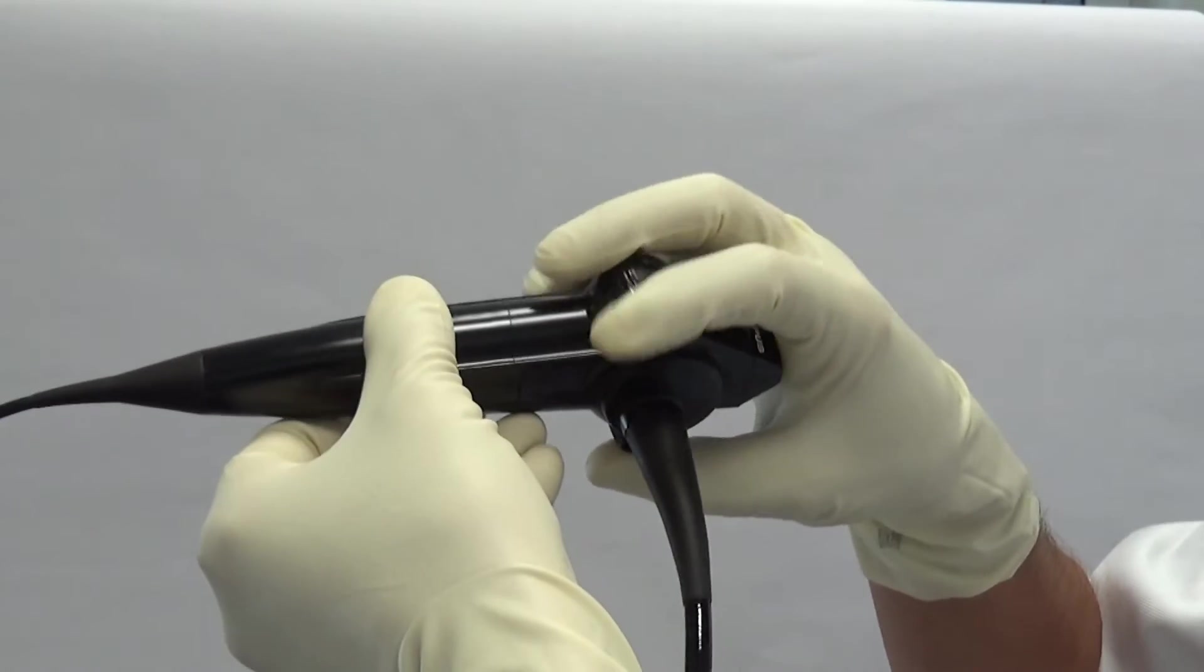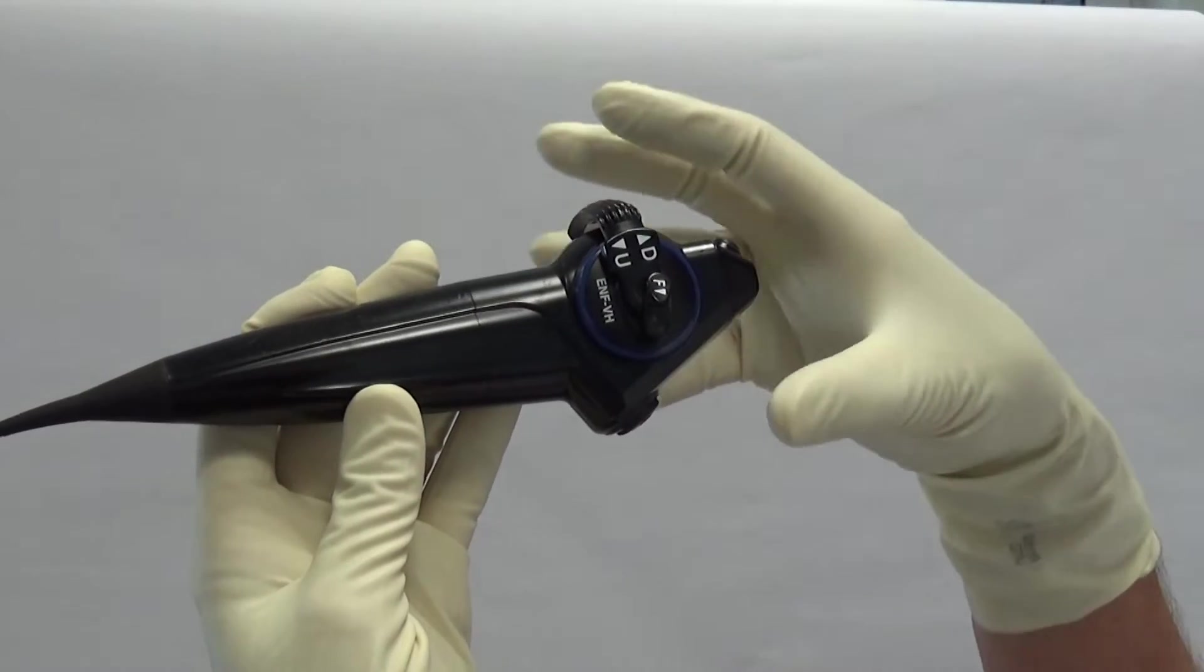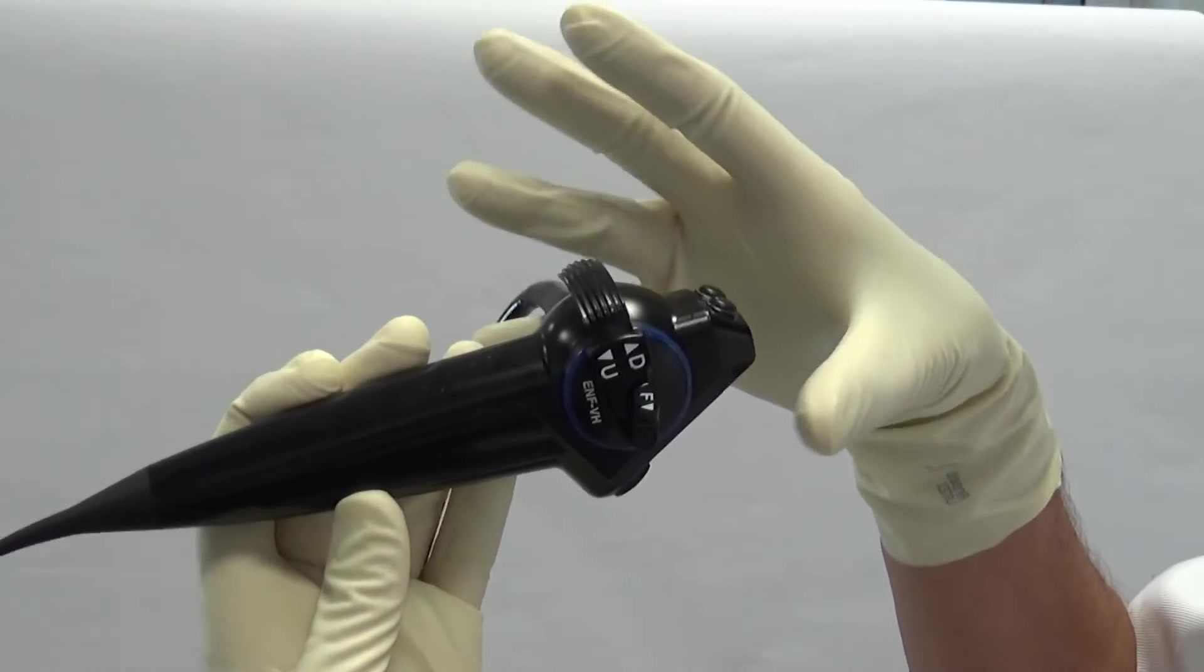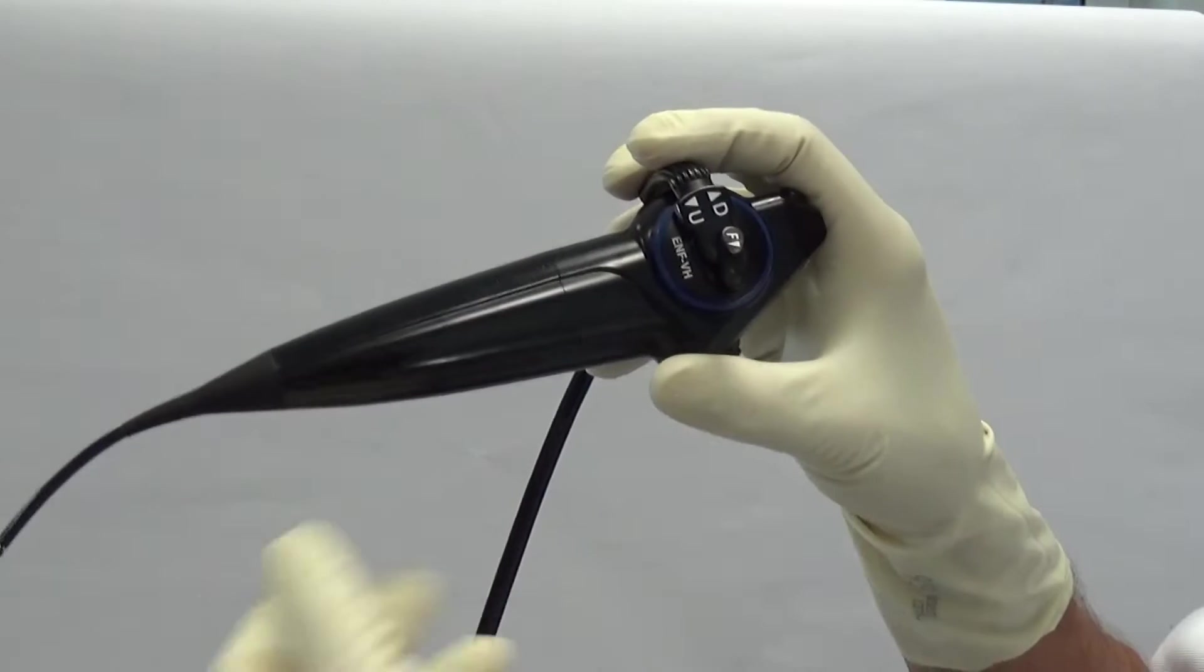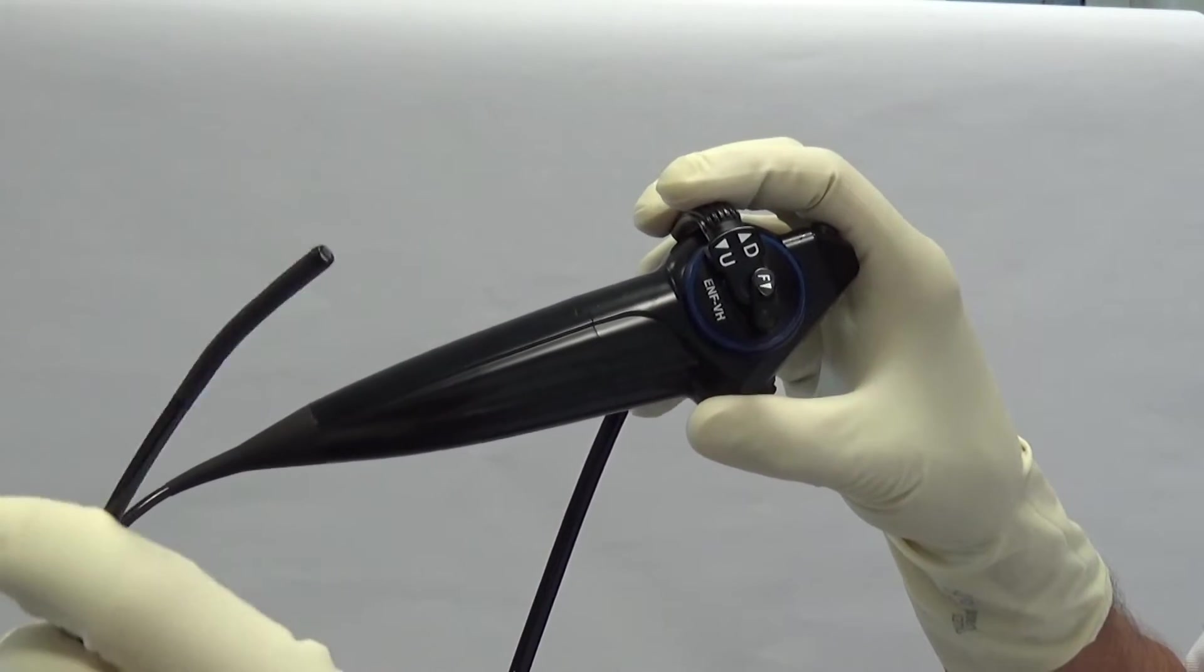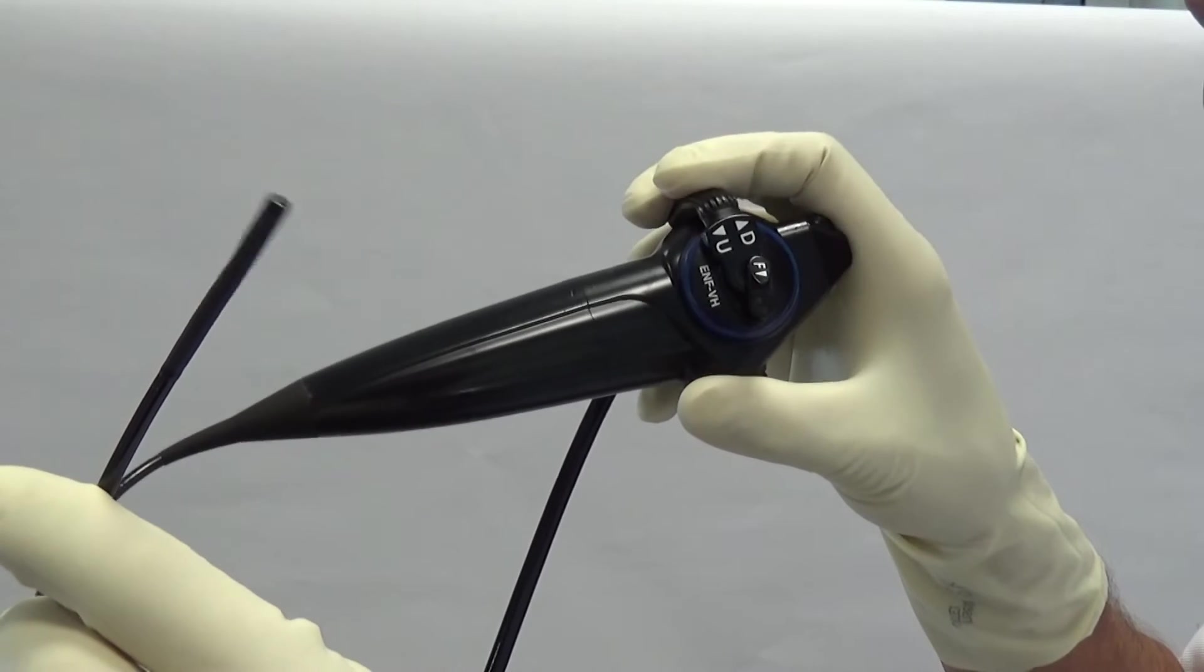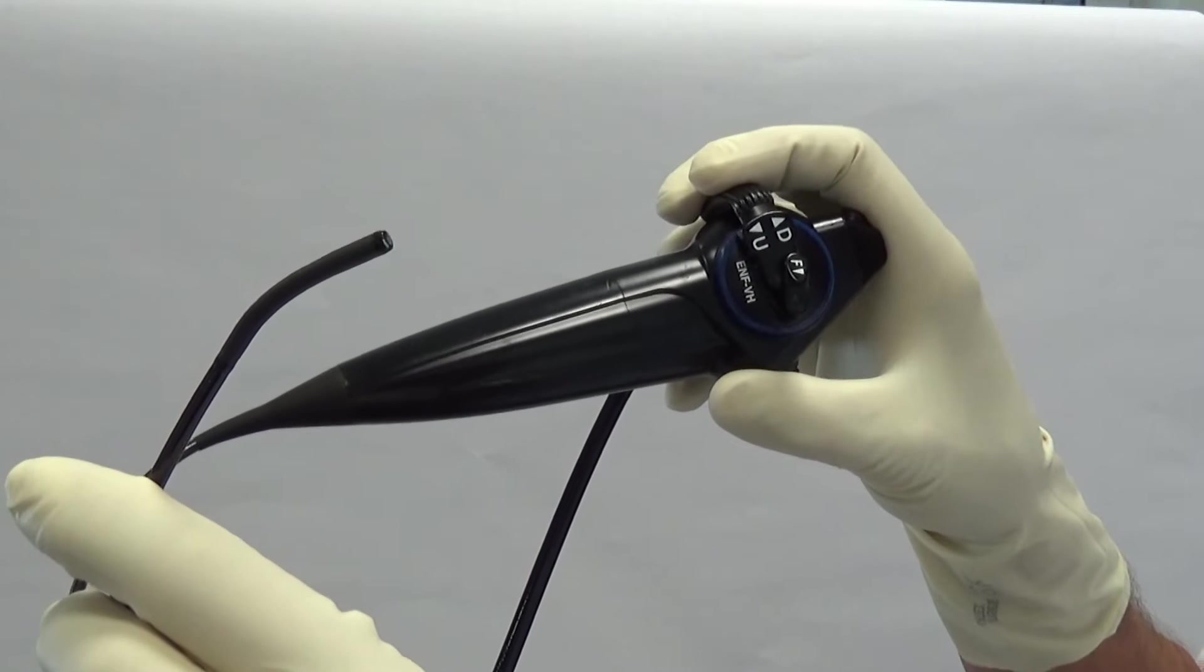There's a third way to hold this endoscope. You just rotate it 180 degrees and hold the endoscope with your finger here. Your thumb is opposing and then with your index finger you can also move the tip as you see.